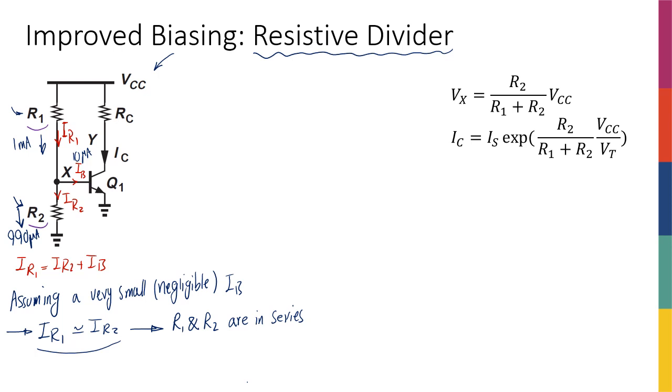And since they're in series, I can actually use the voltage division rule that Vx, the voltage at node X, or the base, which is equal to the voltage at the base of the transistor, is equal to R2 over R1 plus R2 times Vcc.